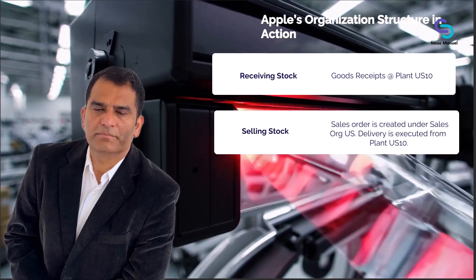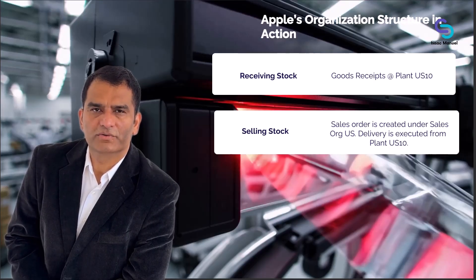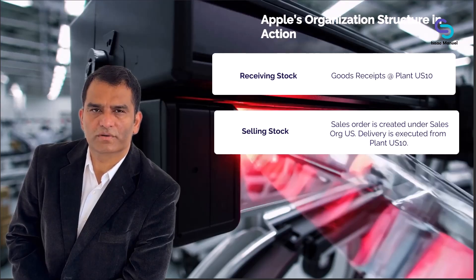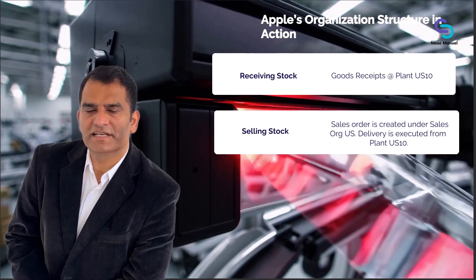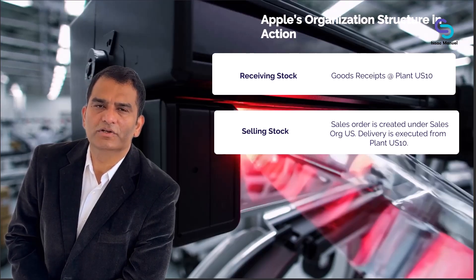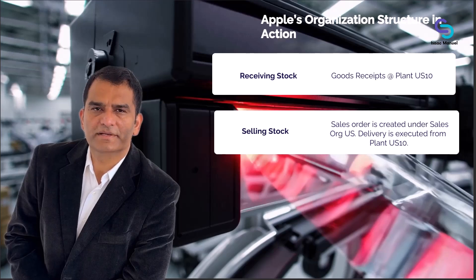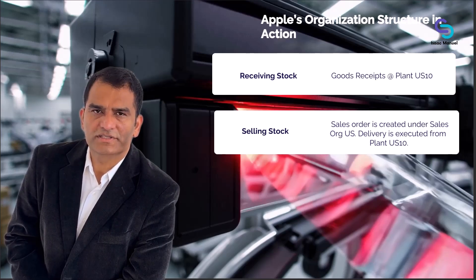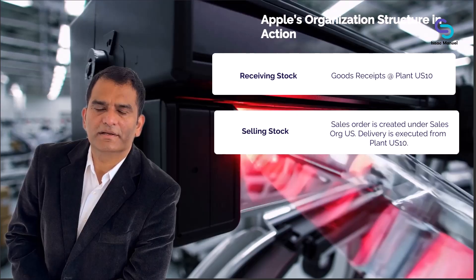When the order is processed and shipped, the delivery is executed from plant US10 and the inventory is decremented from that plant. The revenue from the sale is booked under company code US01, since sales org US is linked to it. Apple's Canada books are unaffected by this U.S. sale because the structure cleanly separates them.